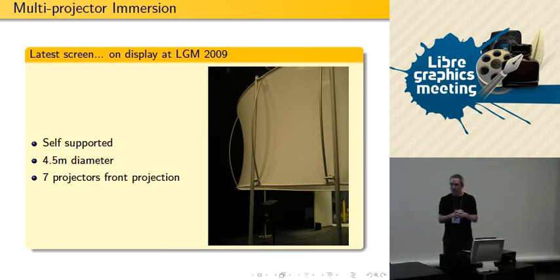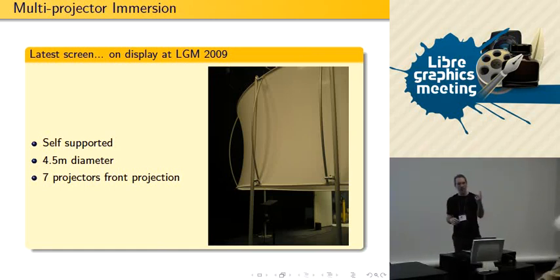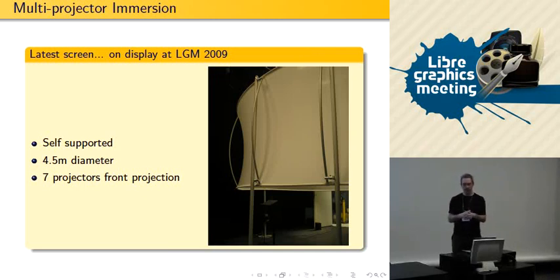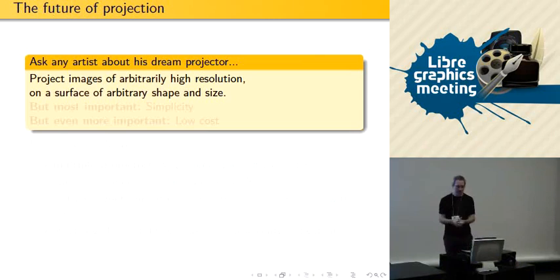Question: how can one camera see the whole cylinder? Well, you need an immersive camera. The question was how can one camera see the whole cylinder — you use an immersive camera. Basically, a fisheye lens, for example. I have a slide about this, so we'll get to that.